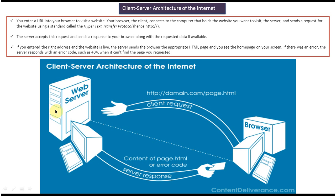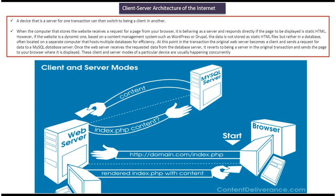This is how the client-server architecture of the internet works. In some scenarios, the web server can act as both a client and a server. If the web server hosts a website that is static in nature — meaning it contains only static pages — then the client sends a request to the web server for a static page, and the web server retrieves that page from the local machine and returns it to the client. In this case, the server is acting as a server only.